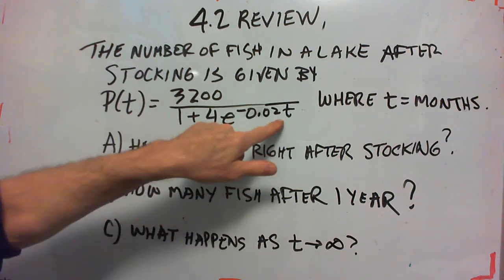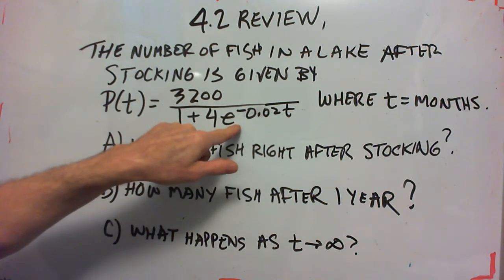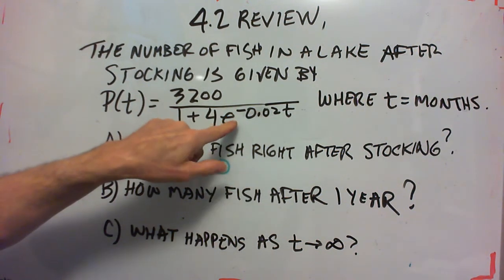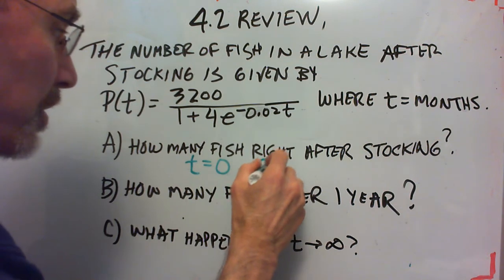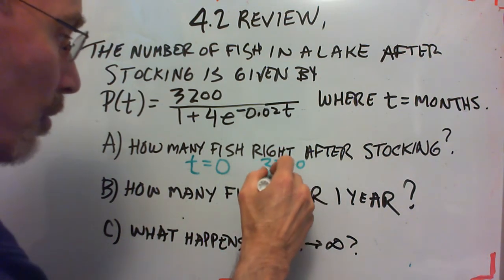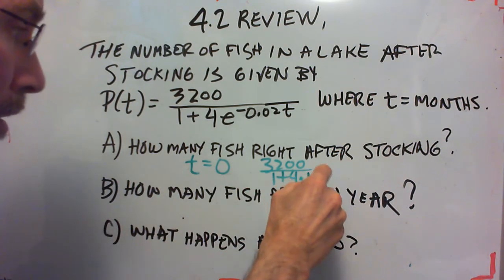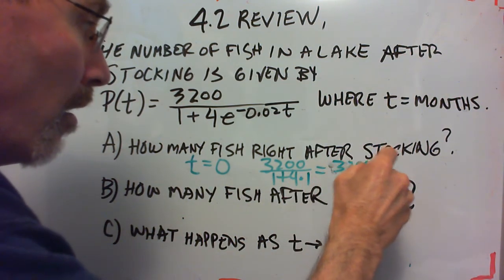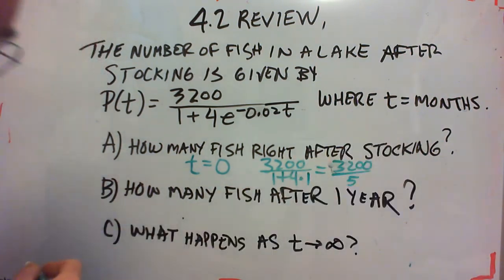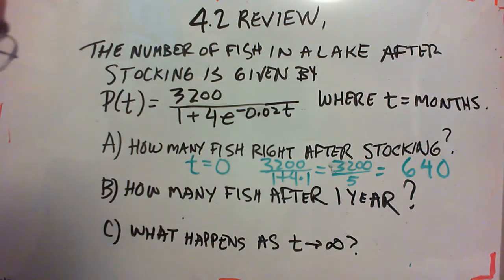Now if t is 0, we have e to the negative 0.02 times 0, e becomes e to the 0. e to the 0 is 1. So this whole thing simplifies to 3200 over 1 plus 4 times 1, or 3200 divided by 5. When you divide 3200 by 5 you get 640. So 640 fish immediately right after it's stocked.